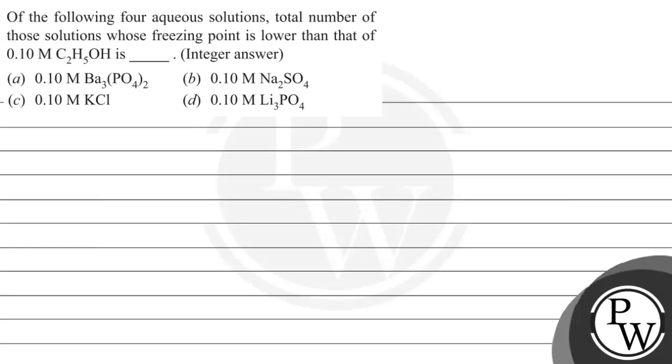Hello, let's read this question. Of the following four aqueous solutions, total number of those solutions whose freezing point is lower than that of 0.1 molar C2H5OH is dash, integer answer. We have provided these four values for the different compounds given here.